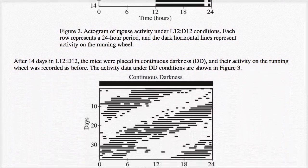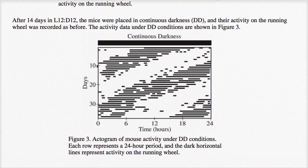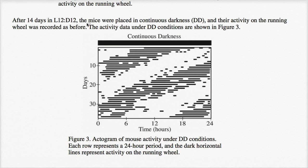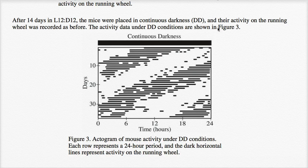After 14 days, so that was just with 12 hours of light, 12 hours of darkness. So after 14 days of L12:D12, the mice were placed in continuous darkness, capital DD. That sounds unpleasant, continuous darkness. And their activity on the running wheel was recorded as before. The activity data under DD, continuous darkness conditions, are shown in Figure 3.